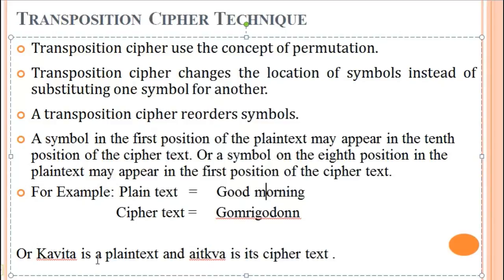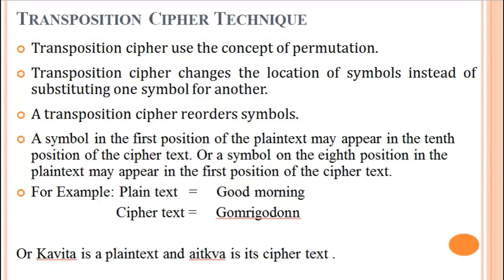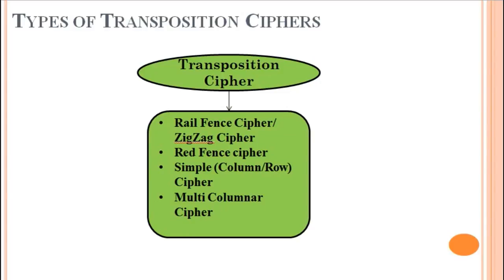Another example: 'Kavita' is the plain text and 'A-I-T-K-V-A' is the cipher text. Here, the first character K appears in the fourth position and second character A appears in the first position. Similarly, third character V appears in the fifth position and fourth character I appears in the second position, and so on. Types of transposition ciphers: rail fence cipher — sometimes called zigzag cipher — simple columnar cipher, multi-columnar cipher, and double columnar row ciphers. We will study these in detail one by one in the next upcoming videos.